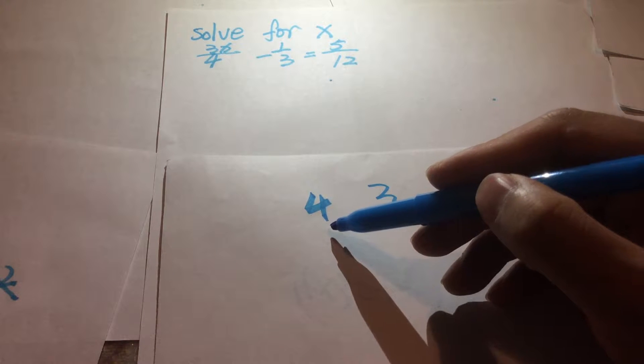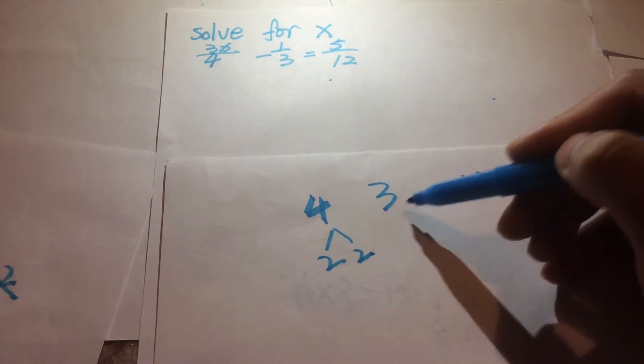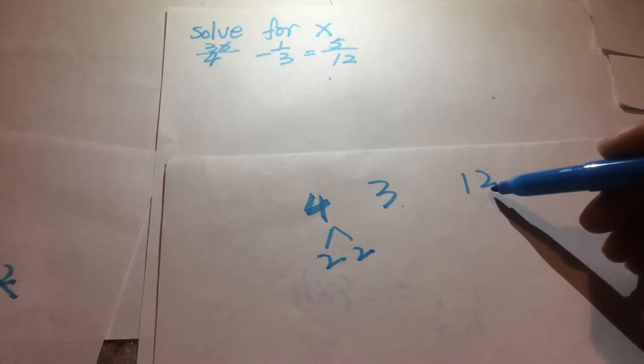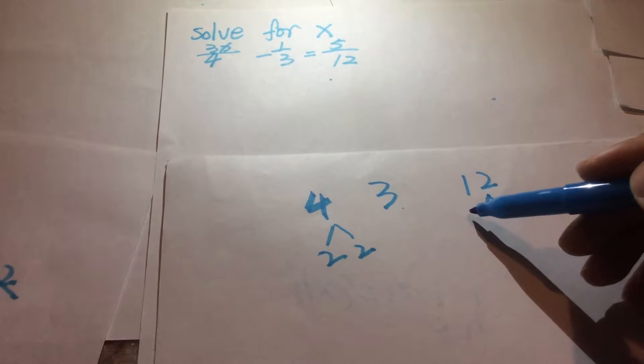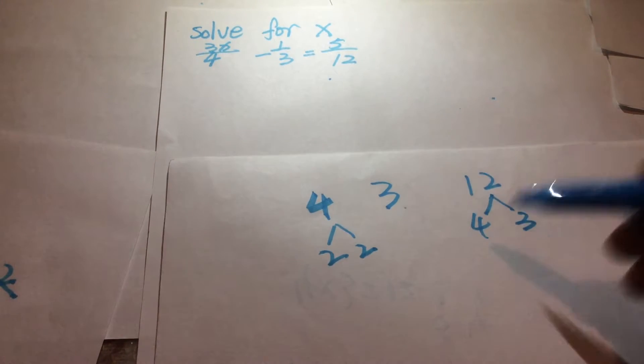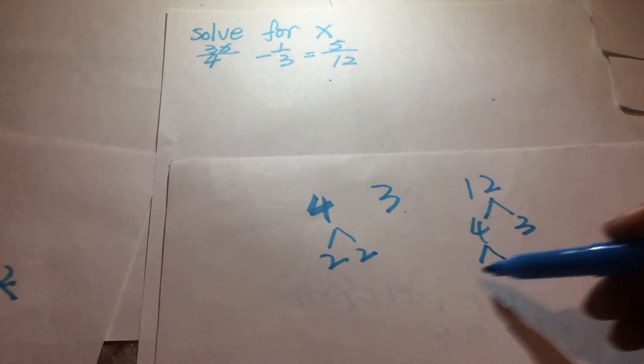4 can be divided by 2 and 2. 3 is only itself. 12 can be divided by 4 and 3. 4 can be divided by 2 and 2.